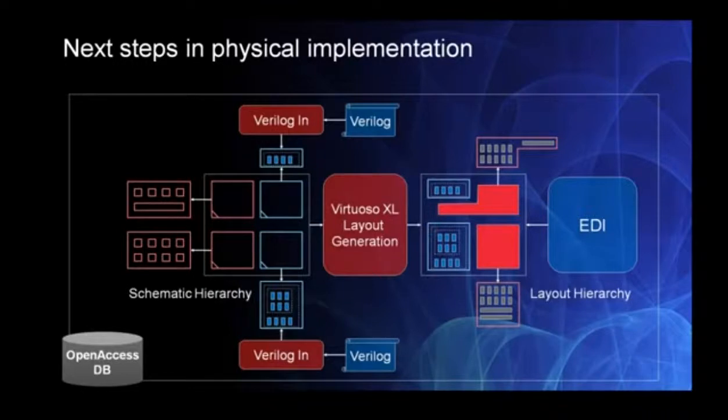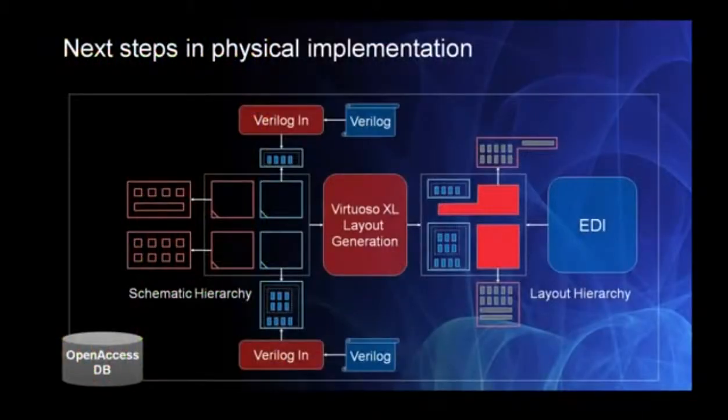Our first major change is the ability to fully characterize the digital cells inside of Virtuoso before placing them at the top level of the design. In 2013, we're working with a couple of companies here today that are looking at early versions of this code right now. This means you don't have to create a digital physical hierarchy, and it's much easier to make top-level ECOs. You can do in-context Encounter optimization and timing-aware schematic-driven layout.